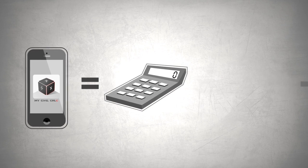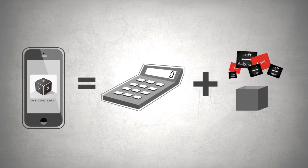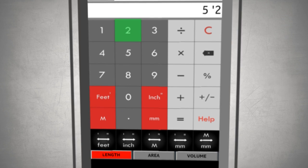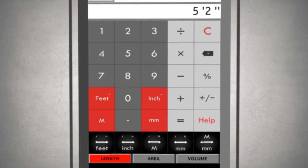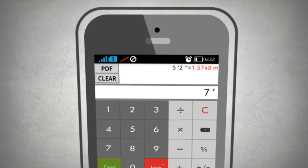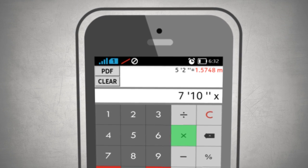Press 5 feet 2 inches. At a single click, you can convert it to, say, meters. Now check this: press 7 feet 10 inches multiplied by 8 feet 5 inches, and you get the result.